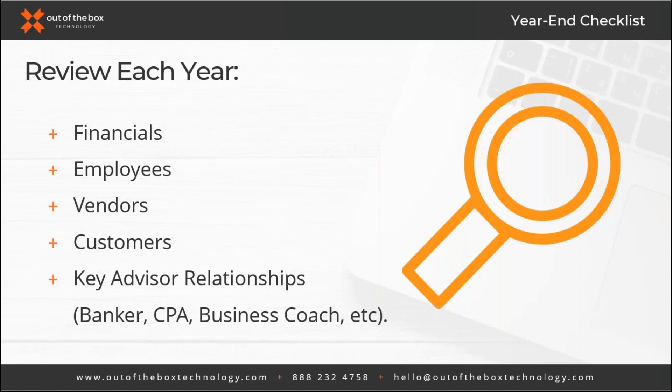The items I typically review every month include bank and credit card reconciliations, any loan account reconciliations, customer deposit liability accounts, and all other balance sheet accounts. I also review open invoices and unpaid bill reports — accounts payable and accounts receivable aging — and your profit and loss. One of the biggest mistakes I see are misstated income or expenses, which results in misstated tax returns, amended returns, or penalties that could have been easily avoided with a monthly review.